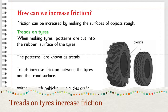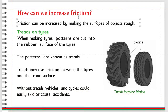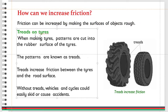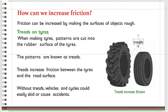How can we increase friction? Friction can be increased by making the surfaces of objects rough. When making tires, patterns are cut into the rubber surface of the tires. The patterns are known as treads.